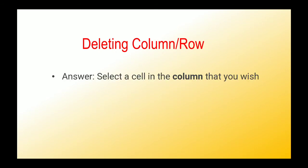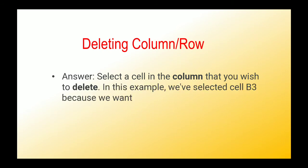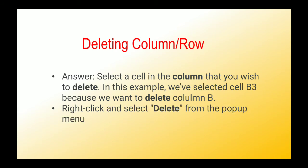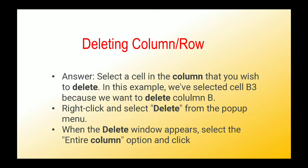Now, how to delete a column — the process is the same at the start. Select a cell in the column you wish to delete. In this example we have selected cell B3 because we want to delete column B. So select a cell from the same column you want to delete. Then right-click and select Delete from the pop-up menu. A Delete window will appear — select the Entire Column option and click OK.